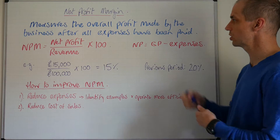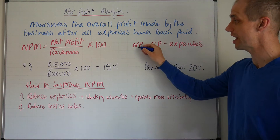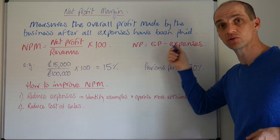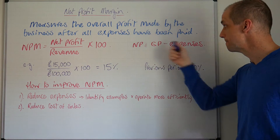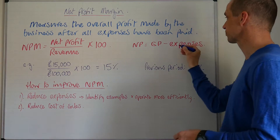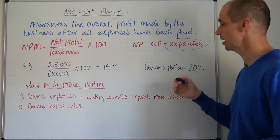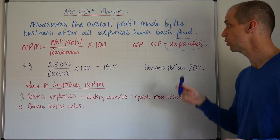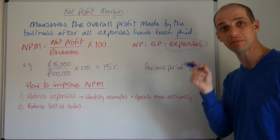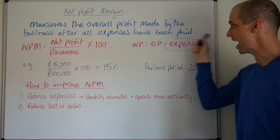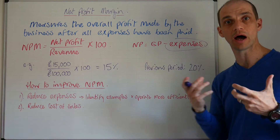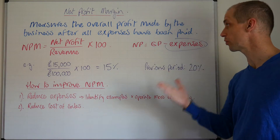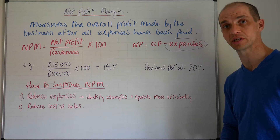If we look at the breakdown for the net profit calculation itself, net profit equals gross profit minus expenses. This is really where net profit is so useful — it enables you to focus on how much of your overall income is going to pay for your indirect costs or expenses.